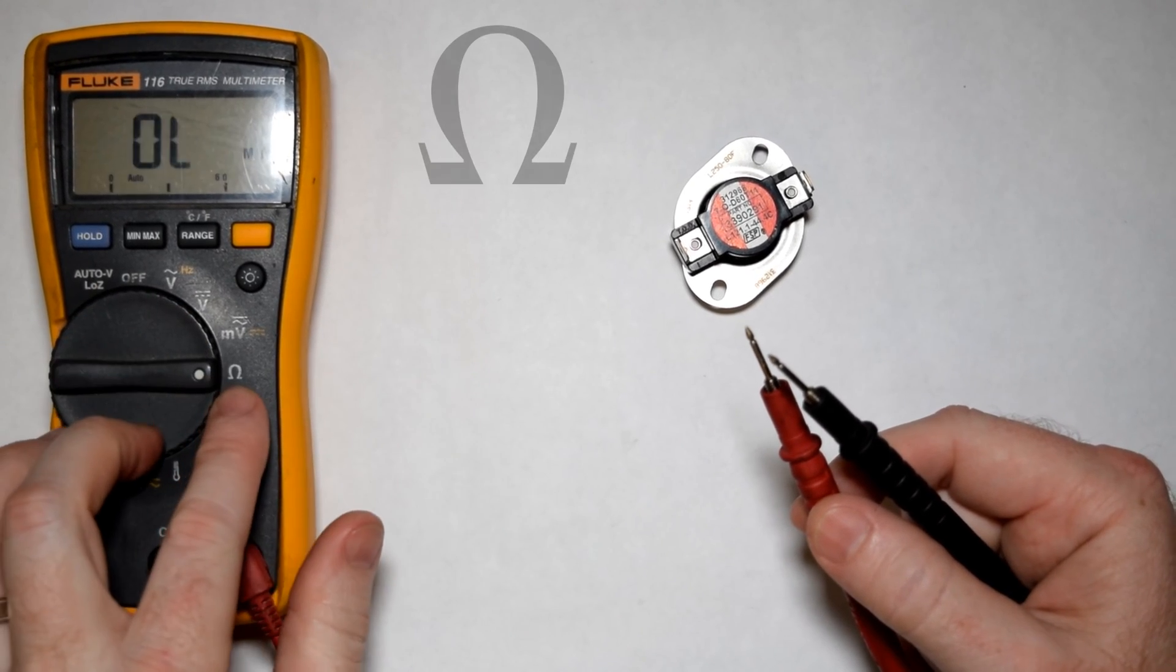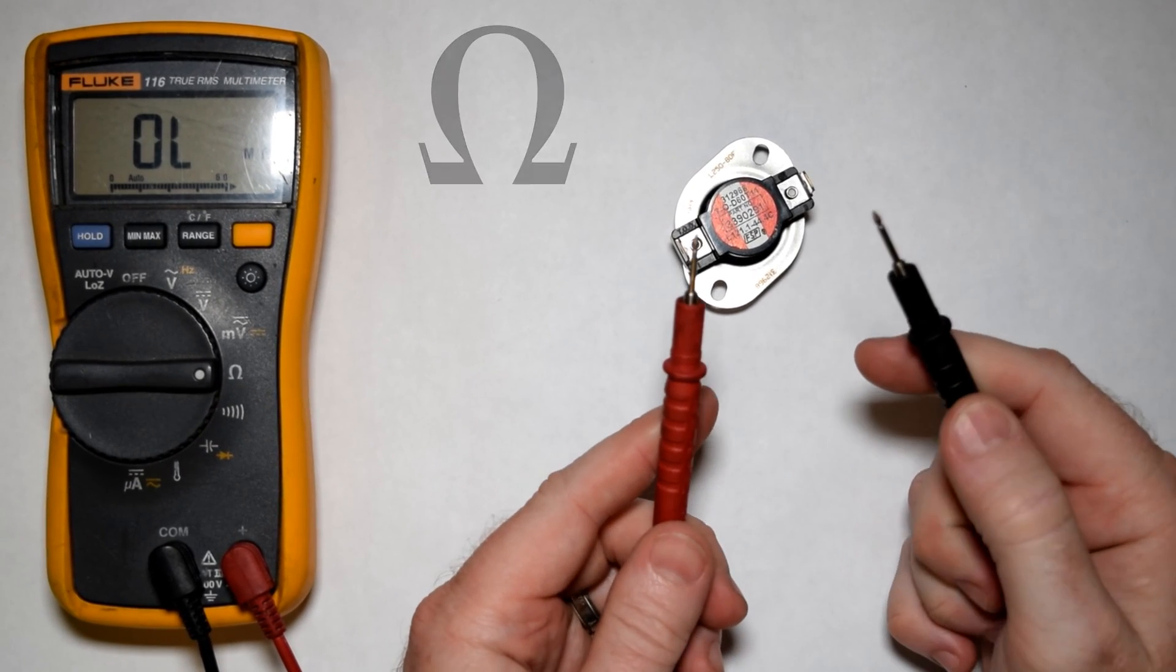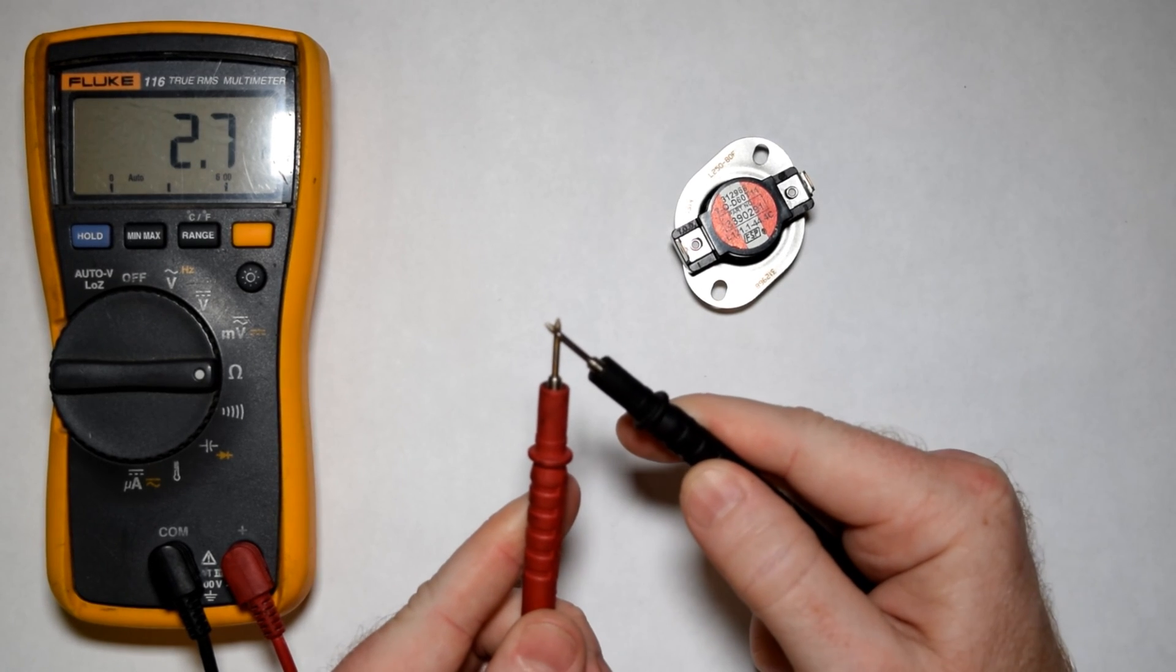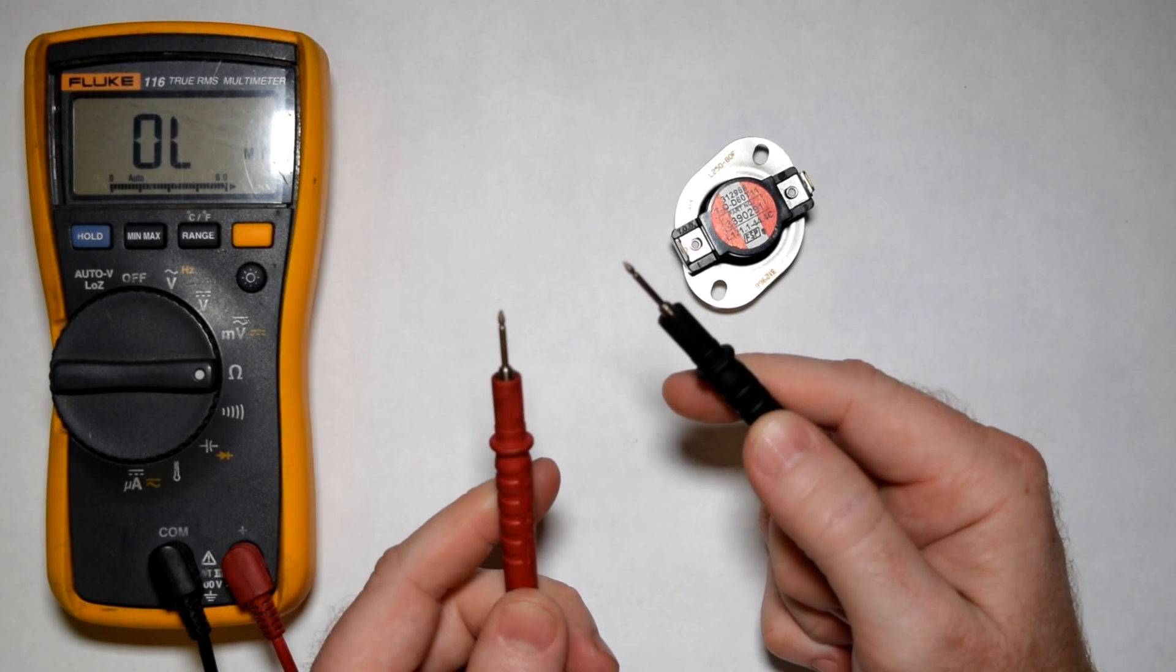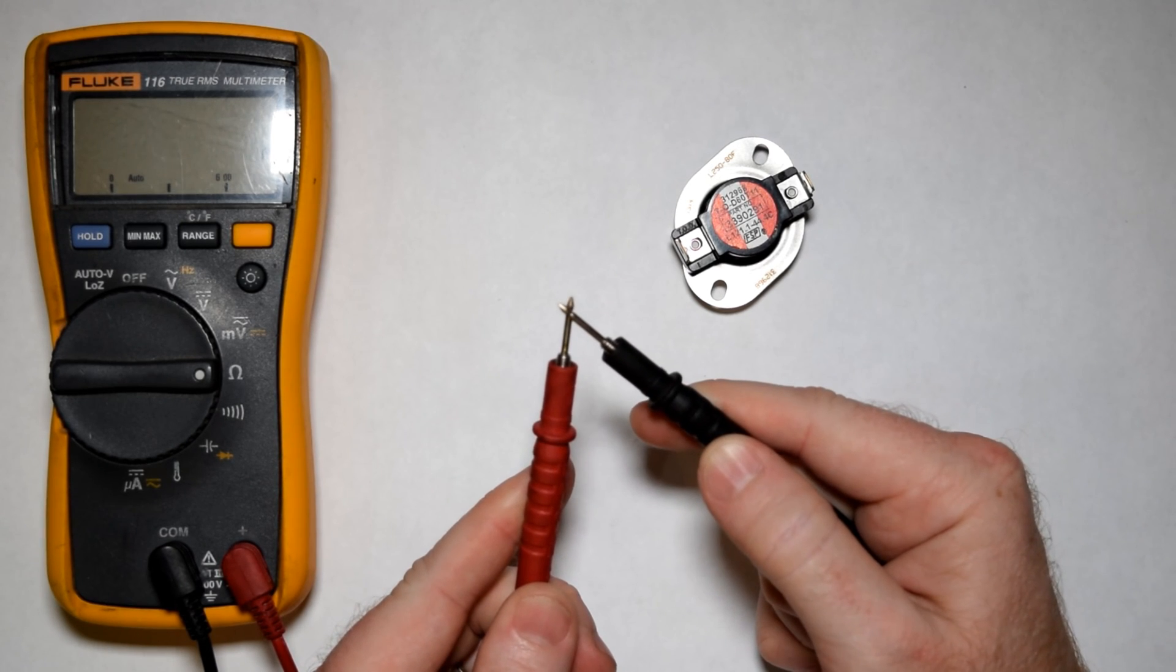And then turn your meter to the ohm test. And essentially what this test will do is tell us if these two leads are touching or not. You can see that the meter changes. It's an open circuit shown as OL. Then when they touch it will show us what the resistance reading is.